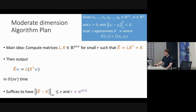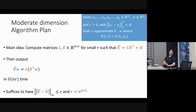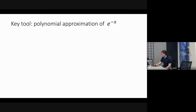That's the whole algorithm. We just need L·R-transpose to be a good approximation of K — differing by at most epsilon in each entry — and R to be small, like n to the little-o(1), so we get an n^(1+o(1)) time algorithm. The key tool — suggested by the name 'polynomial method' — is a polynomial approximation of the exponential function: a single-variable polynomial P such that for all inputs between -B and B, P differs from e^(-x) by at most epsilon.